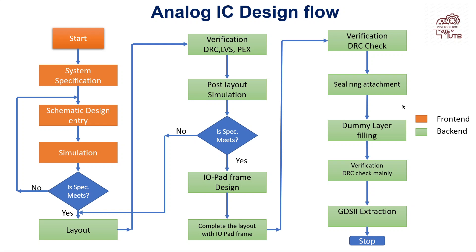First, system specification — this is common in all, both digital and analog and mixed-signal. This step is common. Next is schematic and design entry: we have to design our schematic, then run simulation to check whether the schematic design is okay or not. If specification is met, we will go for back-end design, that is layout. If not, we have to again edit our schematic design.